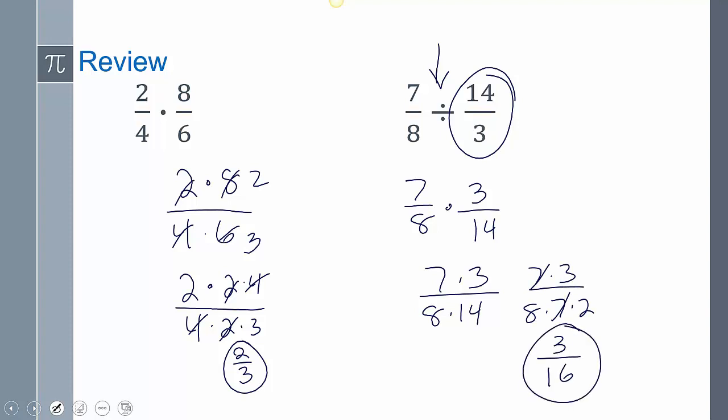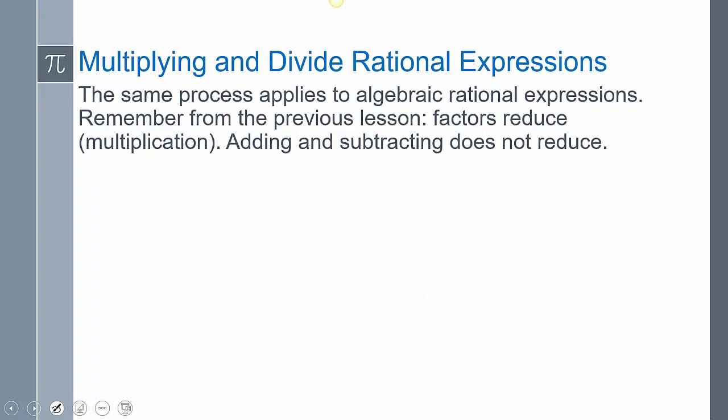So now, when we apply this to algebraic rational expressions, algebraic just means there's now variables and x's and things like that in there. We're going to be doing the same thing, it's just we have x's. We just need to remember, factors reduce. Adding and subtracting doesn't reduce. Factors are what reduce.